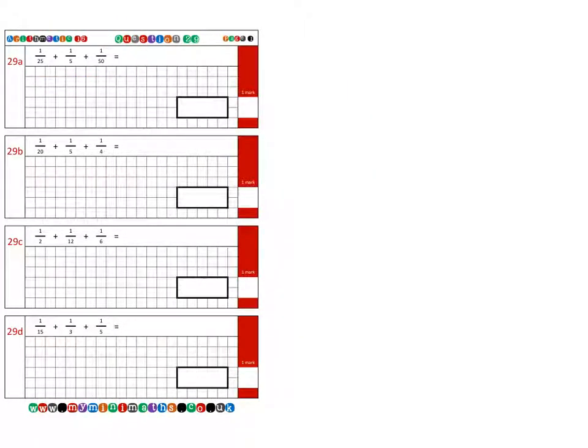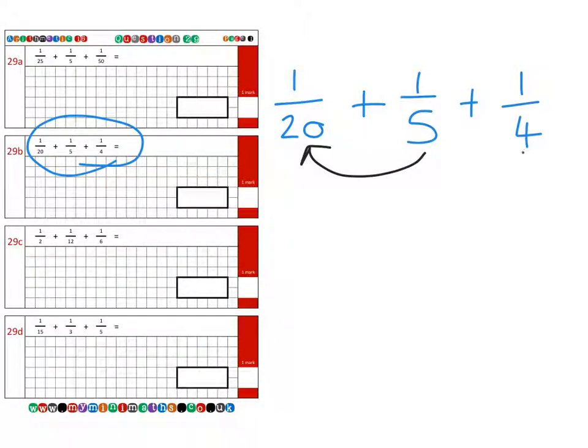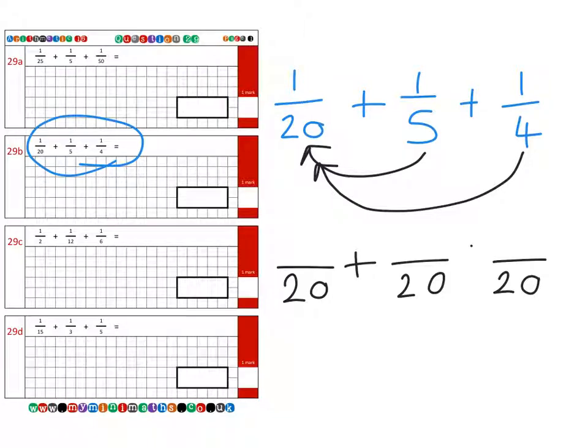The next question, which is question 29B, is 1/20 plus 1/5 plus 1/4. Now, as we can see, the 5 will fit into the 20 and the 4 will also fit into the 20. So 20 becomes our common denominator. I'm going to add them together, of course.